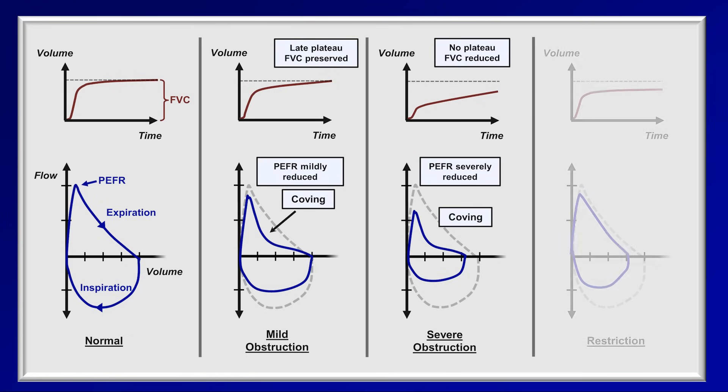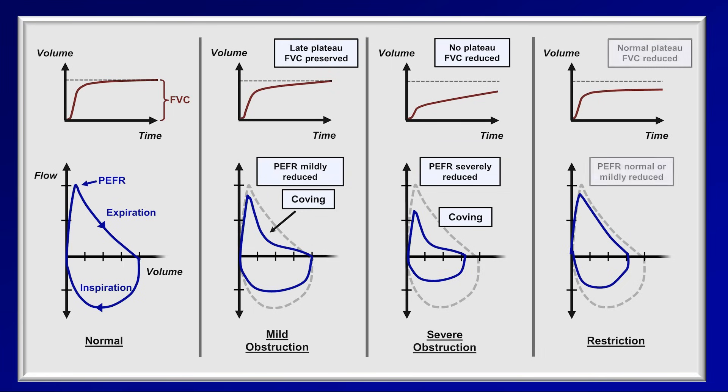In restriction, since airflow is normal, the plateau in the volume-time graph is achieved quickly, but FVC is reduced. The flow-volume loop looks like a normal loop that has been shrunken in all directions, with no coving present.